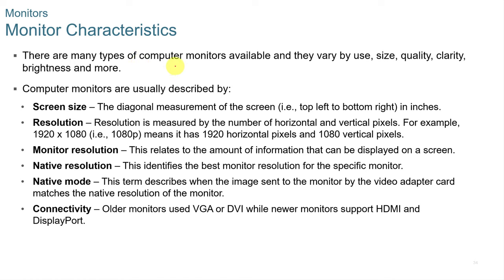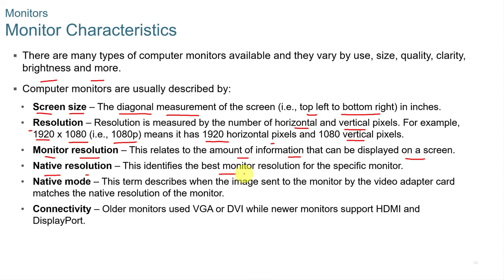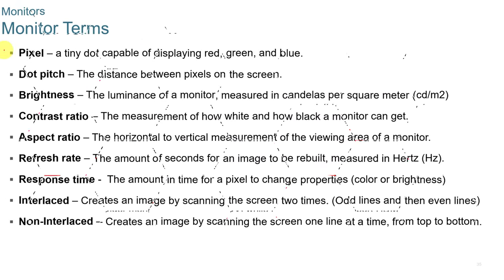Monitor characteristics vary by size, quality, clarity, and brightness depending on the model. Screen size is the diagonal measurement from top-left to bottom-right. Resolution is measured by horizontal and vertical pixels — for example, 1920x1080, or 1080p, means 1920 horizontal and 1080 vertical pixels. Native resolution identifies the best resolution for a specific monitor. Native mode describes when the image from the video adapter matches the monitor's native resolution. Older monitors used VGA and DVI, while newer monitors support HDMI and DisplayPort.